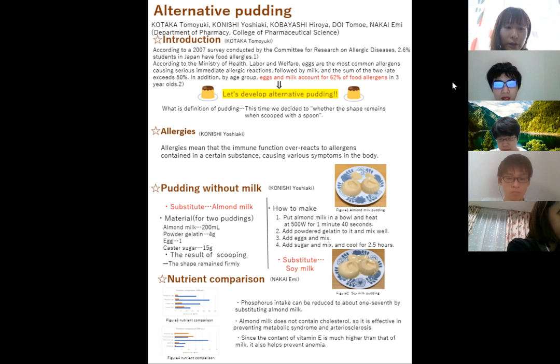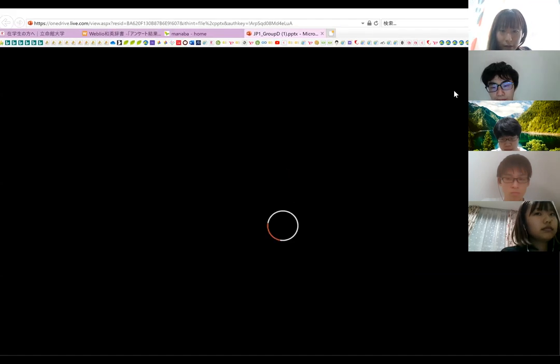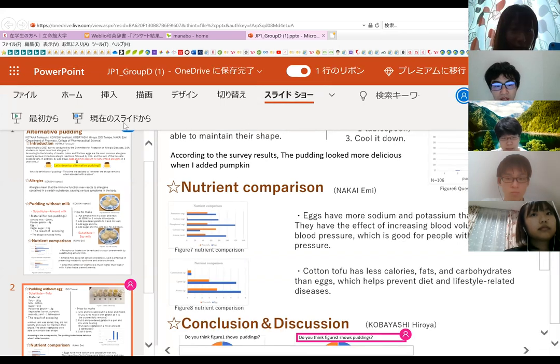Also, by comparing the nutrition of substitute foods with the nutrition of egg and milk, we thought that it could be recommended for people with certain diseases due to uneven nutrition or restricted intake. An example of a disease that develops due to the imbalance of nutrition is hypercalcemia caused by an excess of vitamin D.